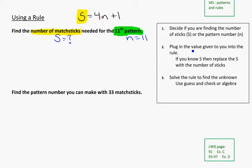Now we want to plug in the value given to you into the rule. We know that n is equal to 11. So using our rule, S is equal to 4 times—I would write n, but since I know what n is, I'm going to say 11—and then plus 1 to complete the rest of the rule. So now I can actually calculate this: 4 times 11 plus 1. So 4 times 11 will get us 44, plus 1 is 45. So S is equal to 45, and this is matchsticks needed.